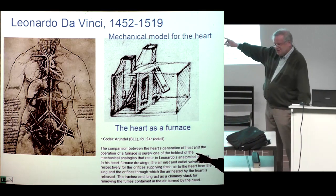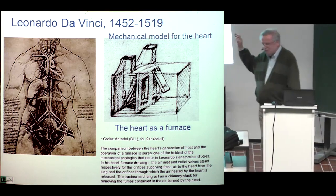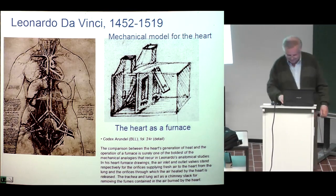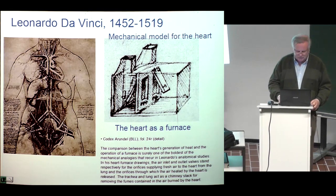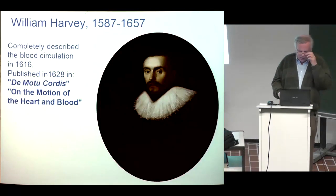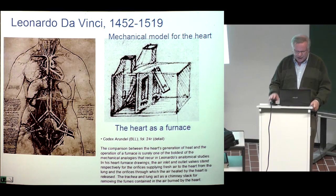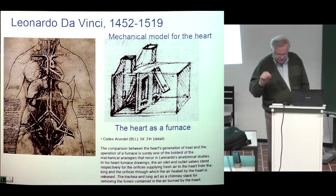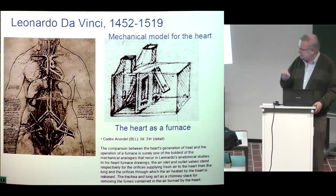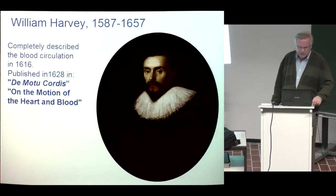Leonardo da Vinci made a kind of model for the heart. He was a very genius gentleman — even though he was a genius and found that there are left and right sides of the ventricle, he was not able to understand the blood circulation. The reason is that blood circulation goes through the capillary arteries and veins, which are so thin that without good microscopic instrumentation they cannot be seen. It was William Harvey who completely described the blood circulation in 1616.